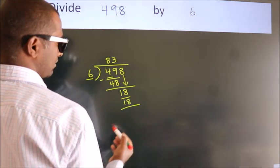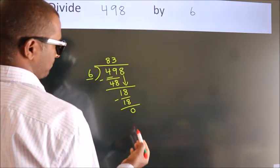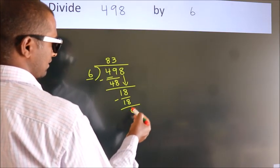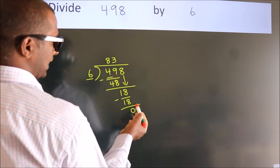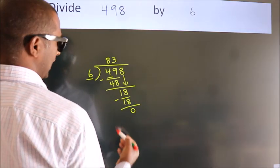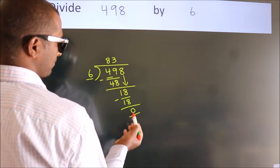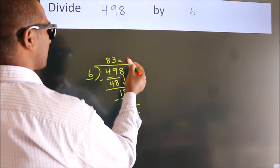Now we subtract. We get 0. After this, no more numbers to bring it down. And we got remainder 0. So this is our quotient.